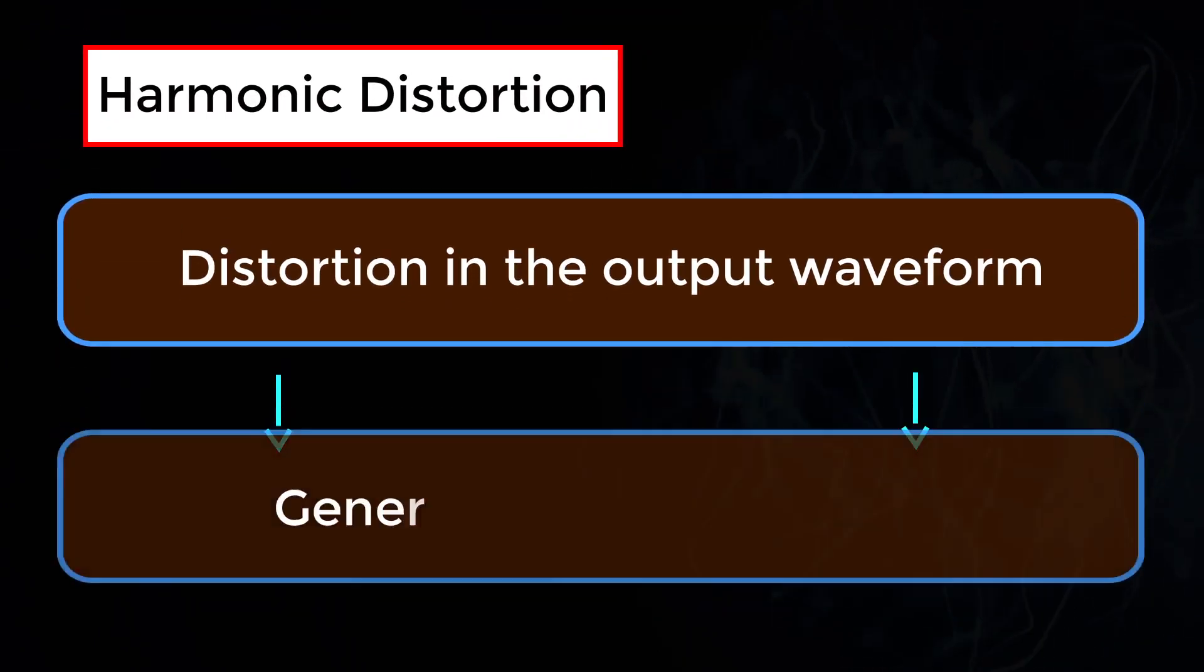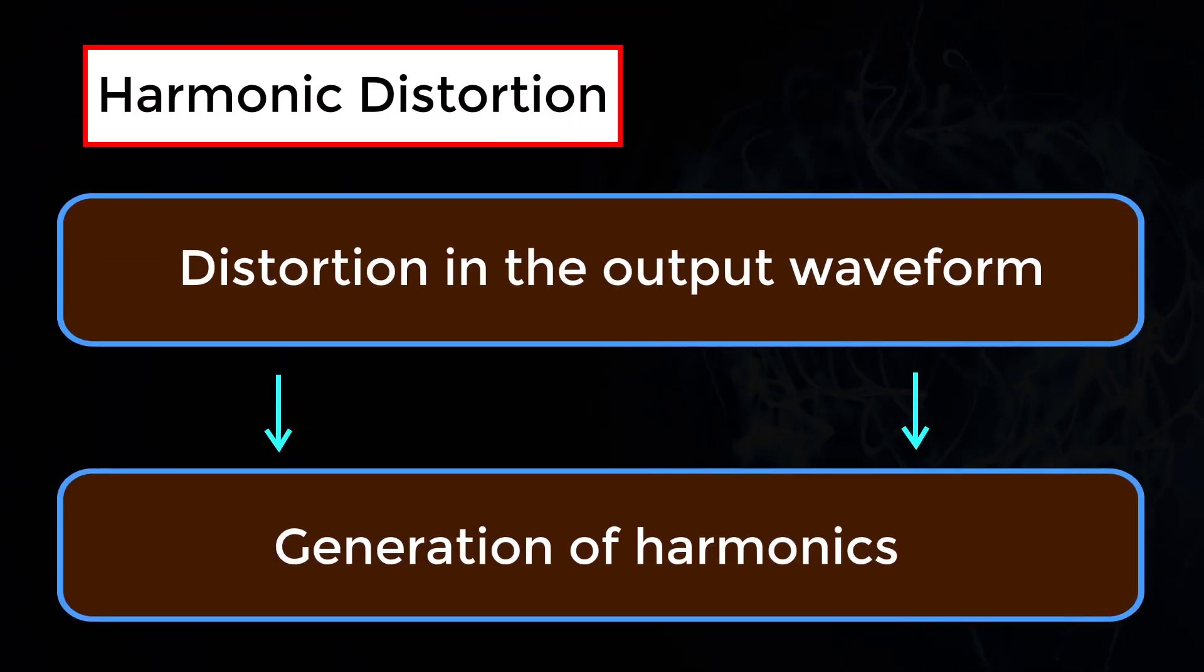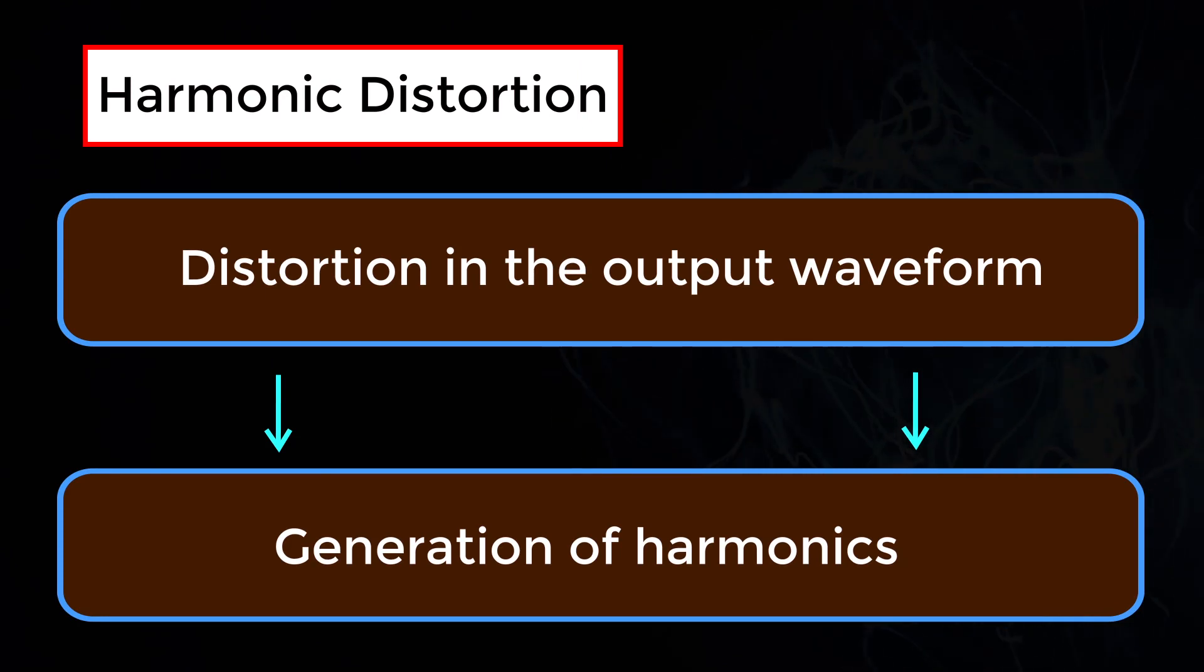Harmonic distortion can be explained as any distortion or corruption in the output waveform due to the generation of harmonics.